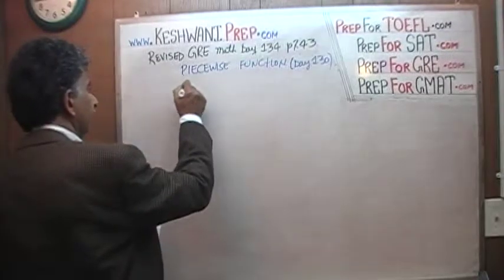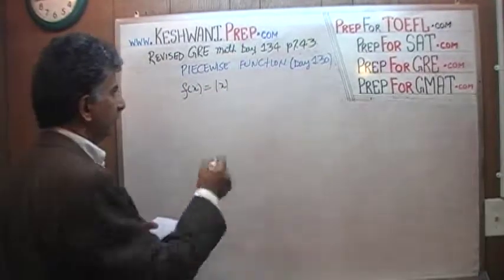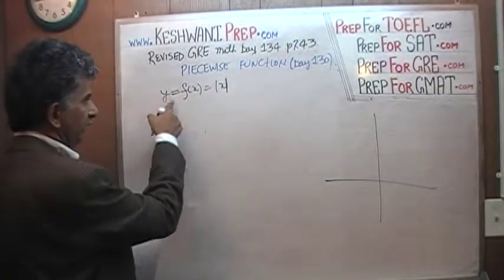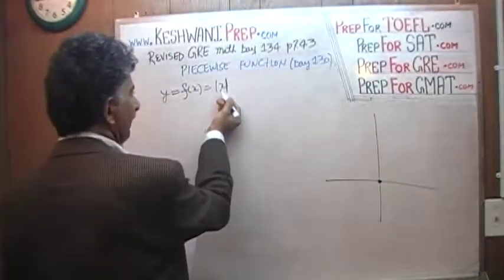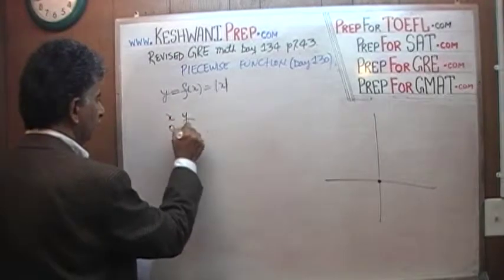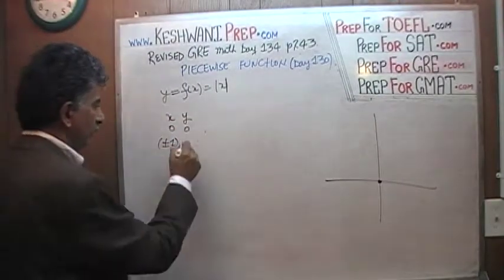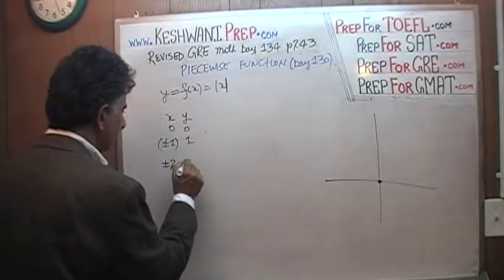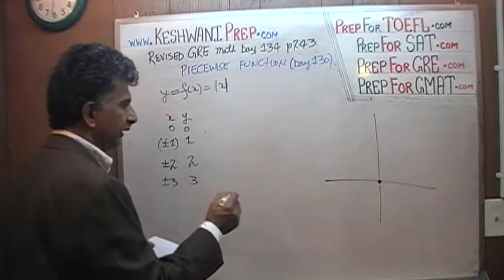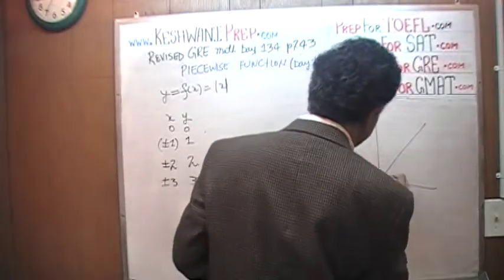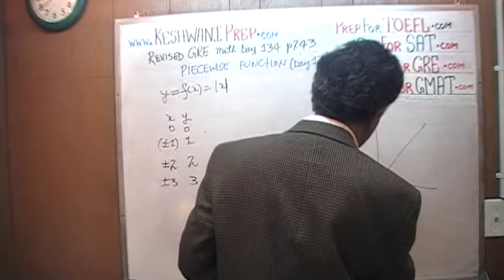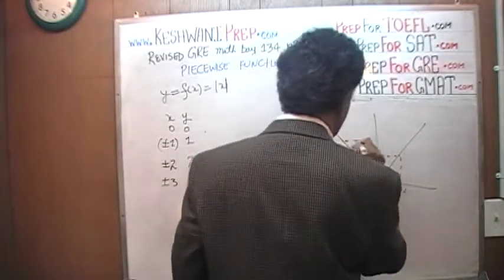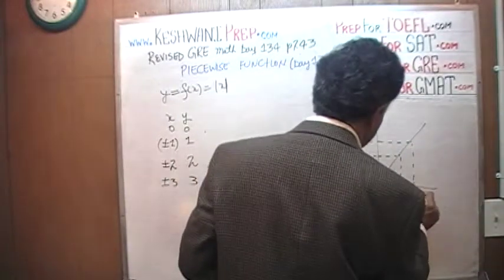What we learned on day 130 is that the function f(x) equals the absolute value of x. When x is 0, y is 0. When x is positive 1 or negative 1, y is 1 — that's what absolute value means: even if x is negative 1, y is positive 1. When x is positive or negative 2, y is 2. When x is positive or negative 3, y is 3. The graph forms a V-shape.